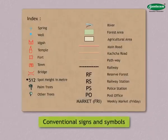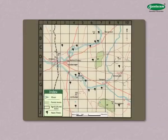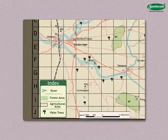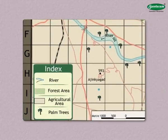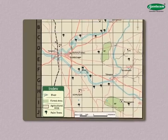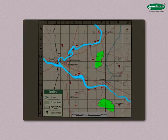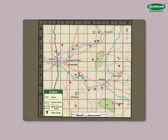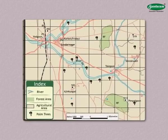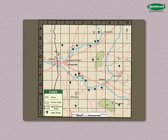When using conventional signs and symbols, it is necessary to give these signs and symbols in the index. Observe color map number 4 very carefully. Some signs and symbols are used there. The index given at the bottom of the map shows the signs and symbols and what they represent. We can read this map making use of the index.